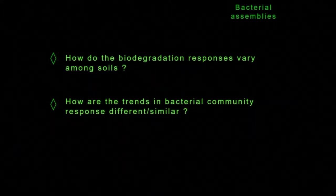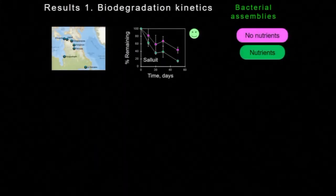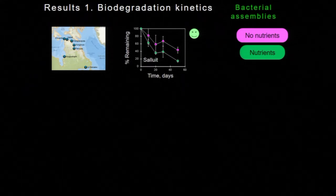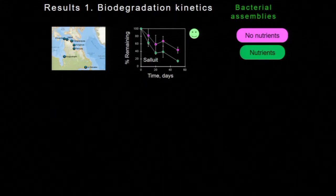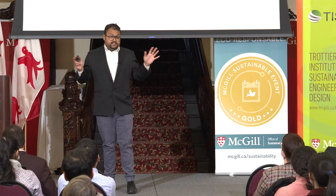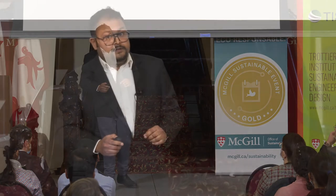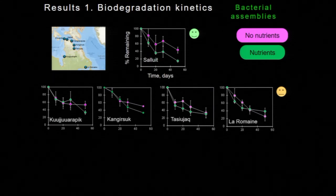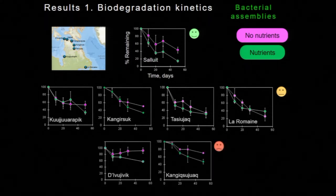Let's start with bacterial assemblies. The two main questions we are trying to address here are: who are the major degraders, how are they different or similar between the soils, and what are the trends between biodegradation responses? These are results from microcosm experiments. Along the y-axis you have the percentage of contaminants remaining, and the x-axis is time. These experiments are all done under actual site conditions — the same temperature, moisture, everything is the same. In the case of Salluit, the overall biodegradation was phenomenally good — more than 80% was removed over 50 days — and adding nutrients actually helped. However, three soils really had very poor biodegradation, with more than 60% of the contaminant still present after 50 days.